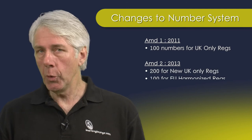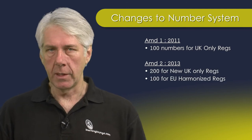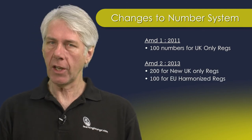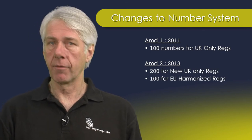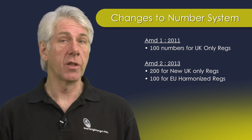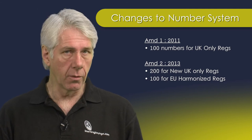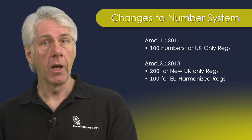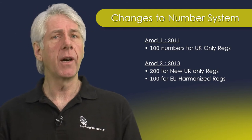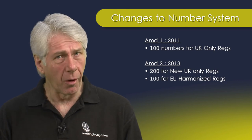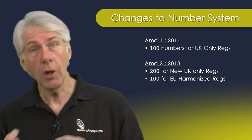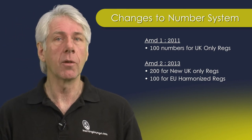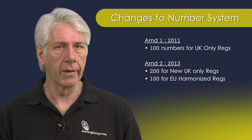When Amendment 2 was introduced in 2013, in certain sections of the regs — for example section 722 — the 100 numbers were used to identify regulations harmonised to Europe, and 200 was used to indicate a UK-only requirement.